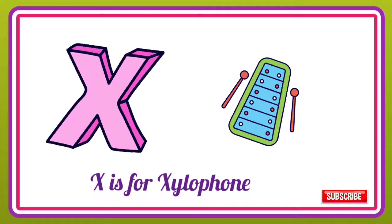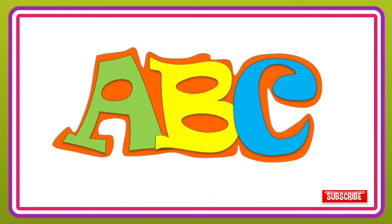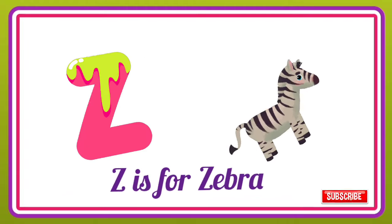X is for Xylophone, X-X-Xylophone. Y is for Yellow, Y-Y-Yogurt. Z is for Zebra, Z-Z-Zebra.